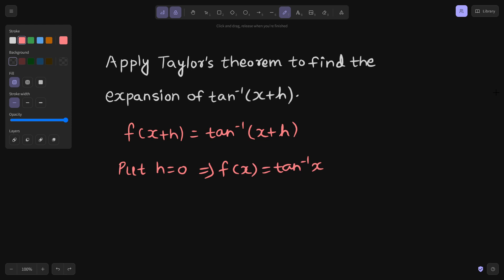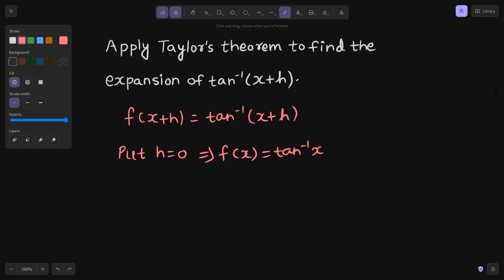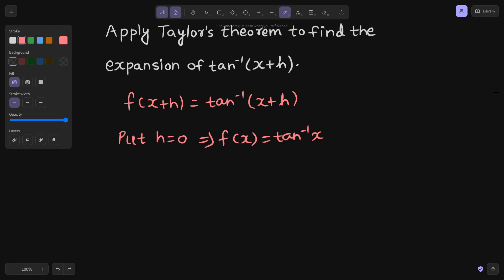Now in order to get at least three terms in the expansion, we need two derivatives at least. So let us find the first derivative. Tan inverse x derivative is 1 upon 1 plus x square. Because we want one more derivative, we can easily write this as 1 plus x square power minus 1.